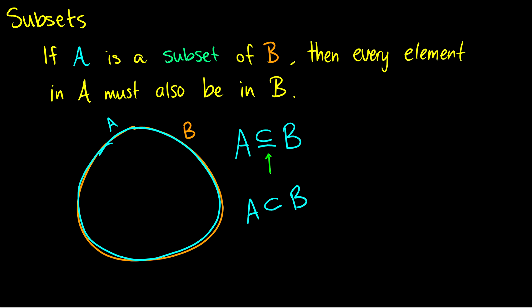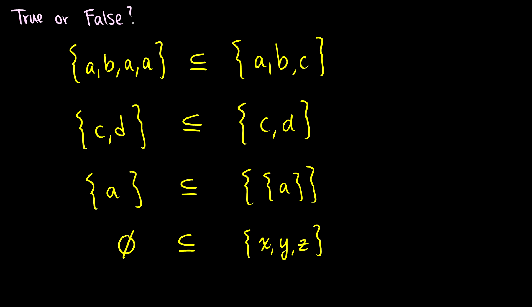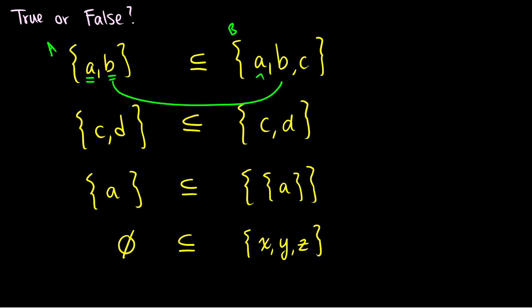Let's do some true or false examples. Is the set {A, B, A, A} a subset of the set {A, B, C}? The first thing to remember is that repeated elements do not matter, so we remove the extra A's. Now we're asking: is {A, B} a subset of {A, B, C}? We check: is A in the second set? Yes. Is B in the second set? Yes. Therefore {A, B} is a subset of {A, B, C} — this is true.